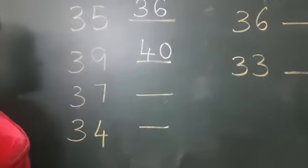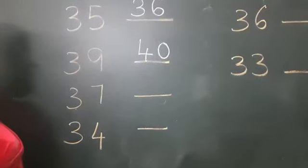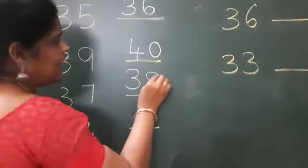Then 3, 7, 37. Which number comes after 37? 3, 8, 38.